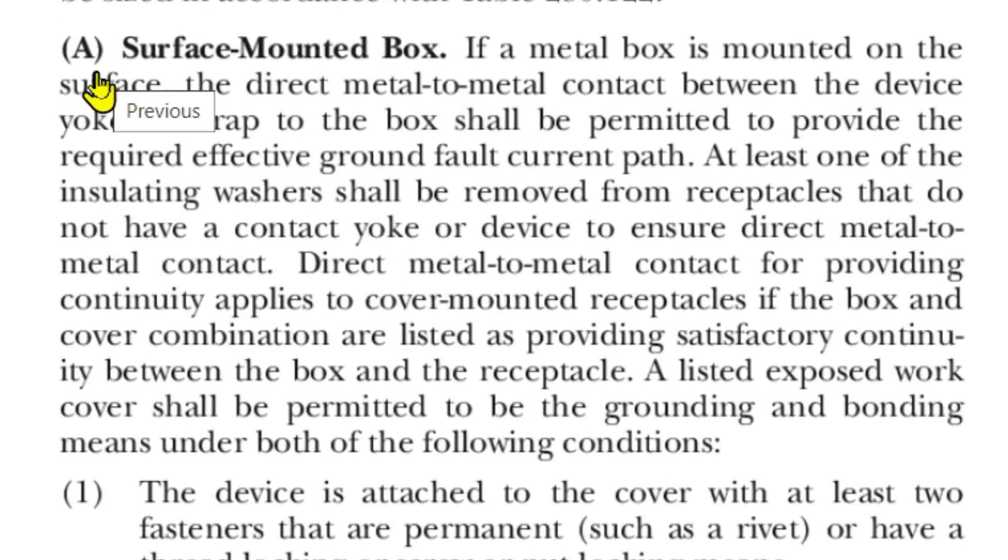So here's A right here - surface mounted box. If a metal box is mounted on the surface, the direct metal to metal contact between the device yoke or strap to the box shall be permitted to provide the required effective ground fault current path. At least one of the insulating washers shall be removed from receptacles that do not have a contact yoke or device to ensure direct metal to metal contact.